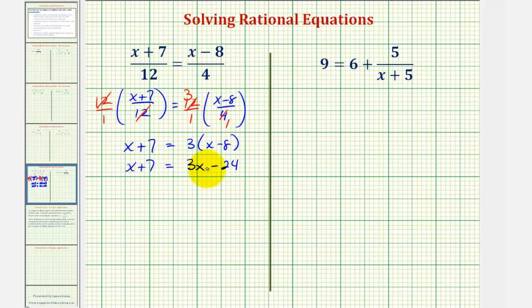So the next step, let's get the x terms on one side. Let's subtract 3x on both sides. We'd have negative 2x plus 7 equals negative 24. Subtract 7 on both sides. We'd have negative 2x equals, this would be negative 31.